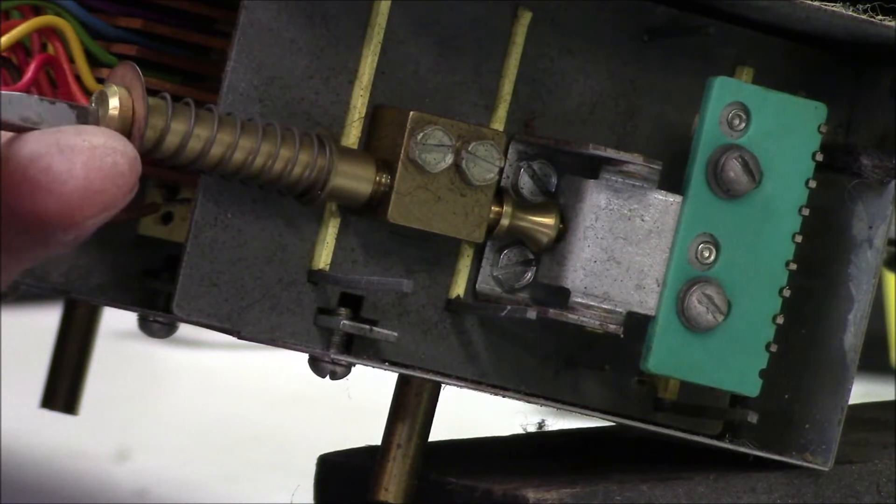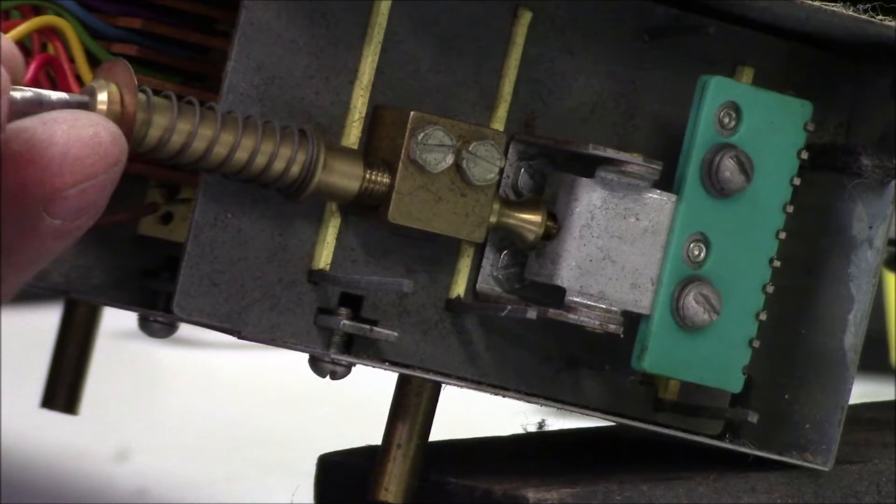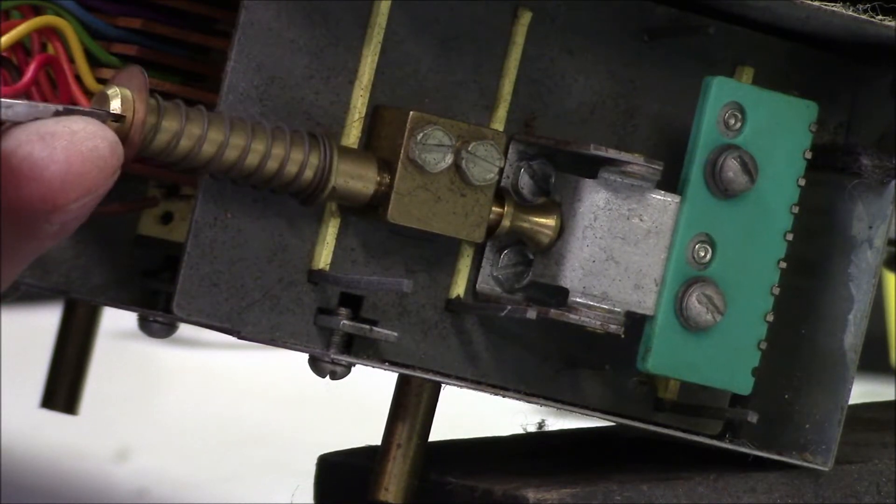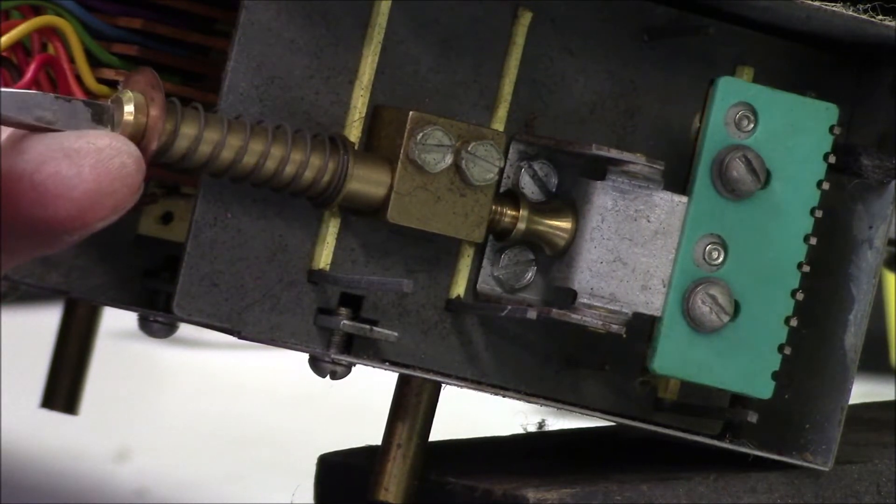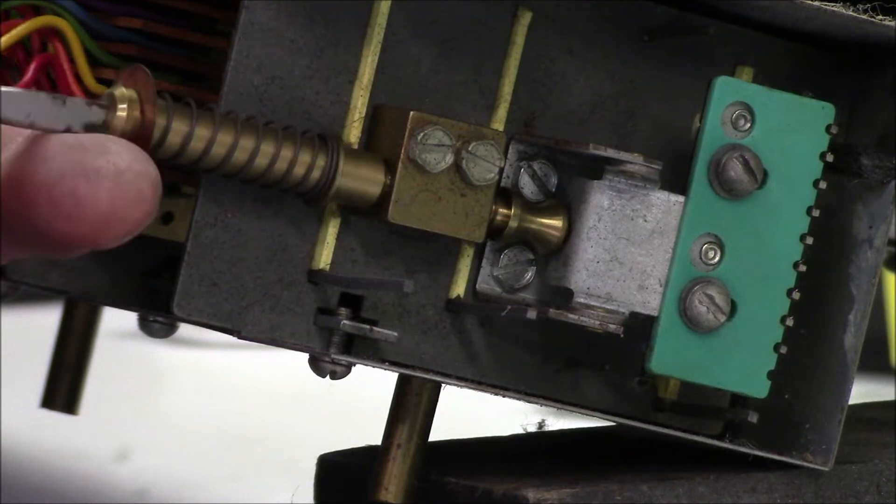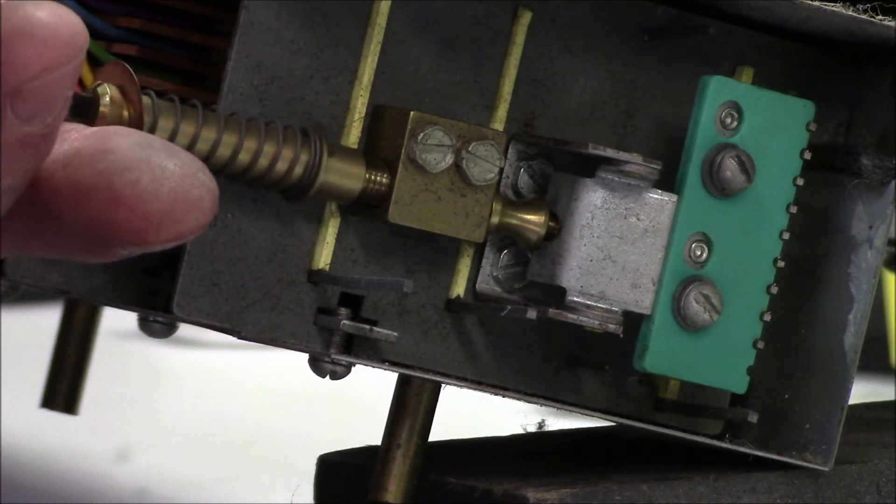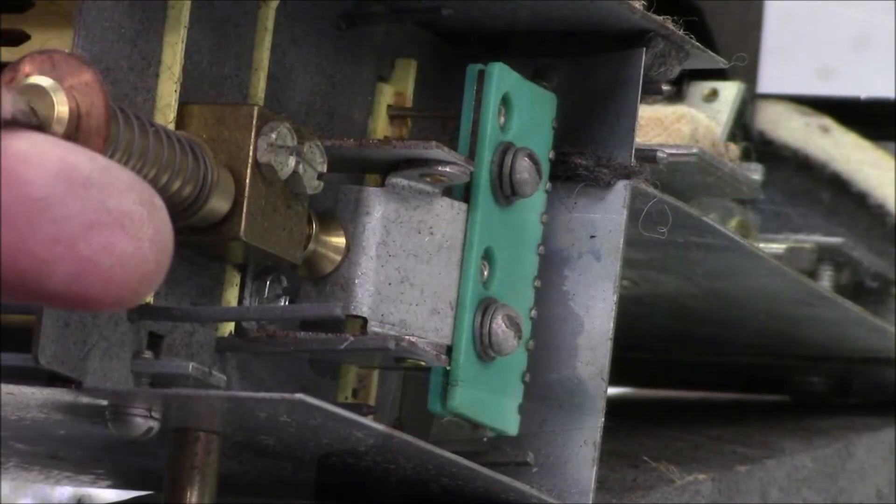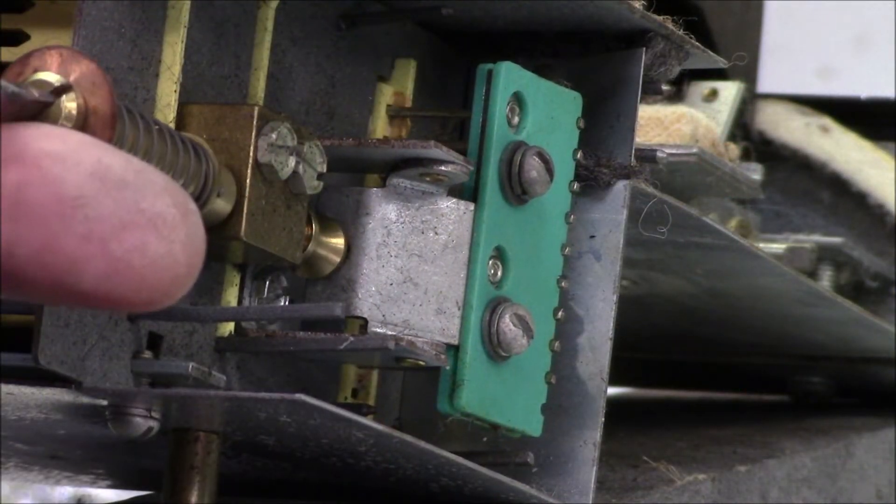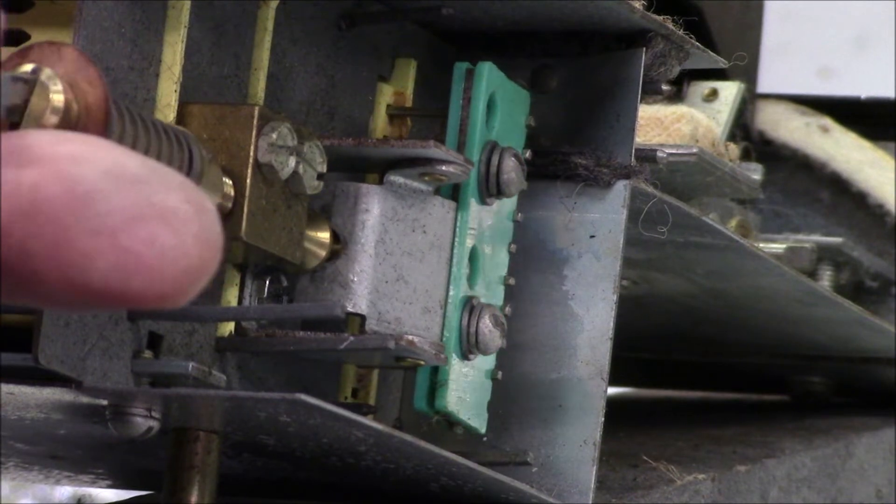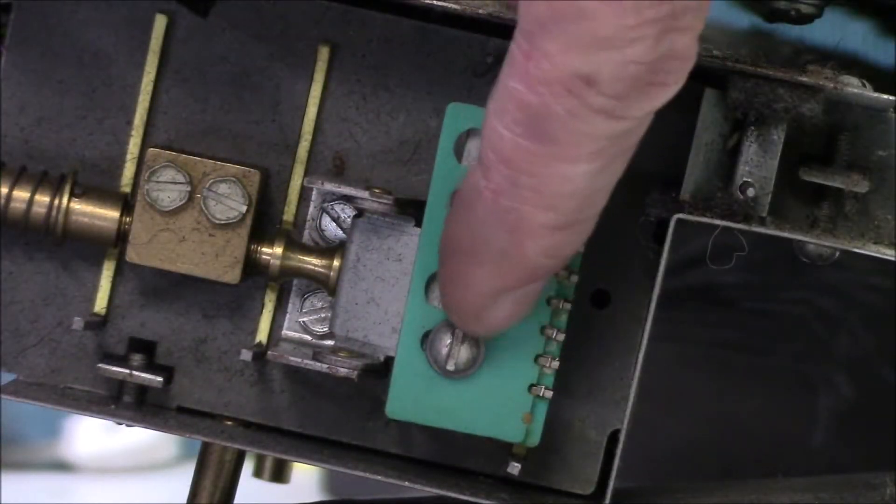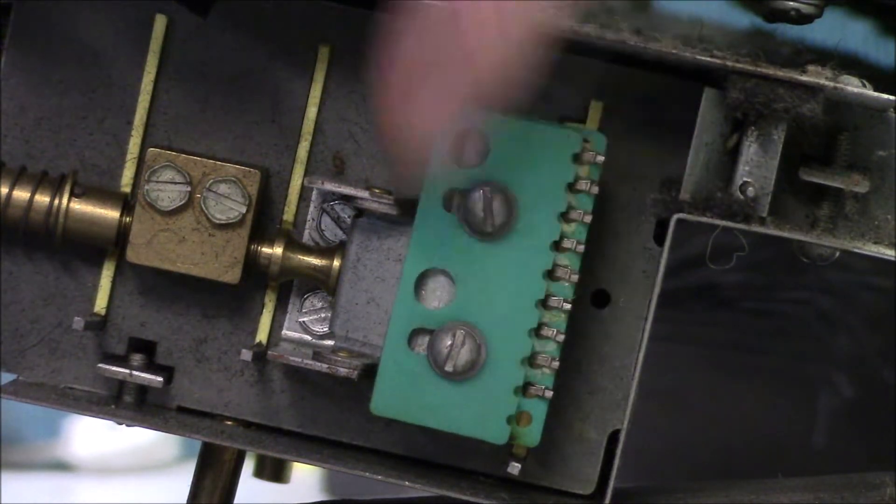So you can see by turning the bus bar shifter, it causes the bus bars to move in one direction, and then turning it the other way, it pulls the bus bars. Looking at it from a different perspective, you can see how far these bus bars actually move. It's a good idea to shift your bus bars by half or a full turn of that bus bar shifter every few years. It's going to make your bus bars last a lot longer.